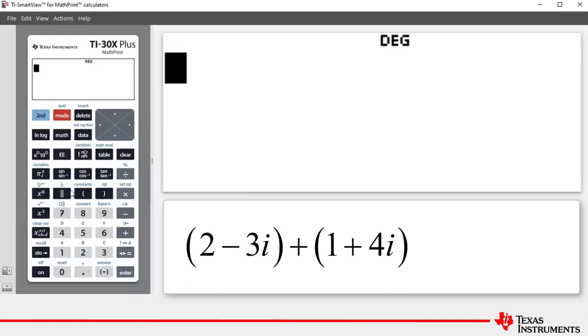We're going to have two minus three. We don't need to use the multiplication key. To access i, we press this multitap key and it toggles through pi, e, and then i.